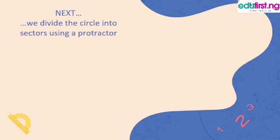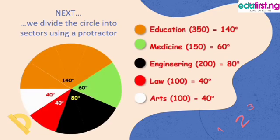Once we're done, we draw the pie chart by dividing the circle into sectors using a protractor. Education has 140 degrees and is shaded orange. The green part is for Medicine at 60 degrees. The black shaded region is for Engineering at 80 degrees. The red region is Law at 40 degrees, and the white region is Arts at 40 degrees. This is how a pie chart is constructed and how data is represented.